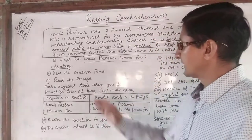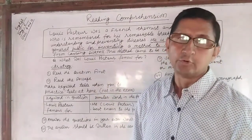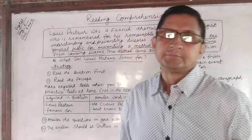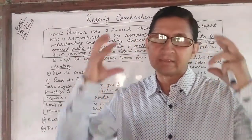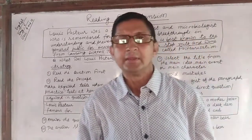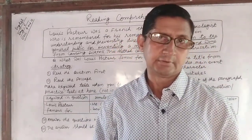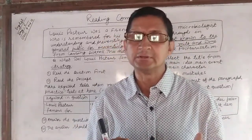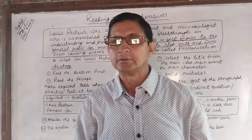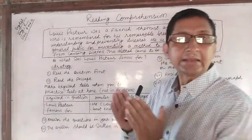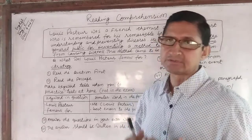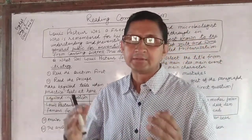You should make a keyword table during practice at home. During the exam, you have to make this keyword table in your mind. Generally, the questions appear in a chronological order. This means the answer of the first question will appear at the beginning of the passage, while the answer of subsequent questions will appear in the later portion of the passage.